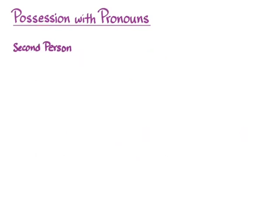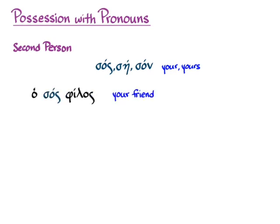It's going to be the same in the second person, where we also have a possessive adjective: sos, se, son. So we can have ho sos philos, meaning 'your friend.' And then we can use the genitive of the personal pronoun in its enclitic form and get ho philos sou — 'the friend of you,' or 'your friend.'